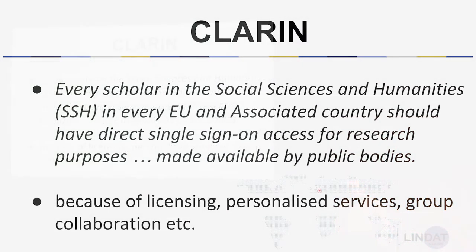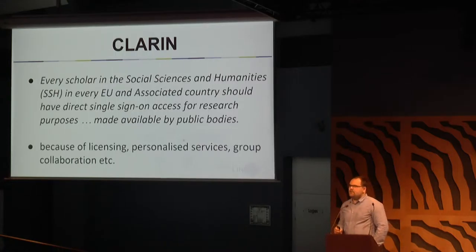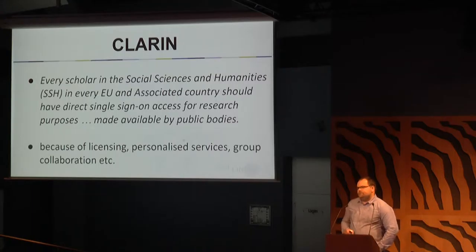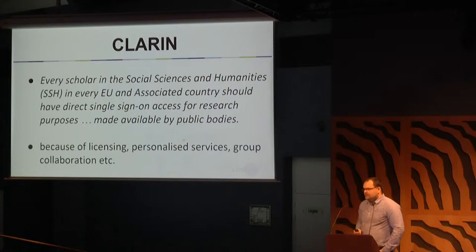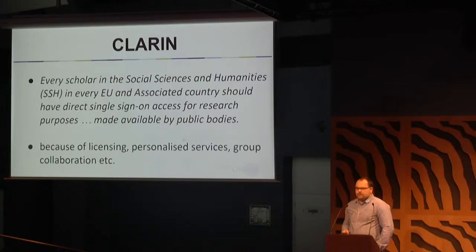One of the pillars of Clarion is that every scholar should have single sign-on access for research purposes. It means you have to have a username and a password and you should be able with this one username and password to access the resources and data services in the Clarion infrastructure. Some of the services or data may be restricted by a restrictive license, because all data has to have a license, and the service would like you to sign a license. So that's why you need a username and password.